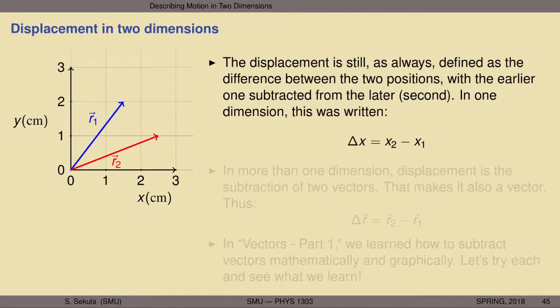The displacement is still, and as ever always, defined as the difference between the two positions, with the earlier one subtracted from the later one. So the earlier position was given by the vector r1, and the later one was given by vector r2. In one dimension, if we only had one coordinate axis — for instance the x axis — and we had an early location x1 and a later location x2, we would write the displacement as delta x equals x2 minus x1. Nothing really changes: this definition remains the same; we merely extend it to two or more dimensions.